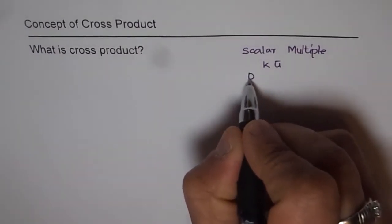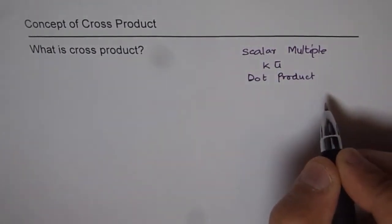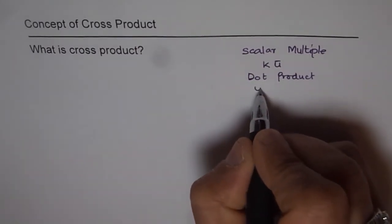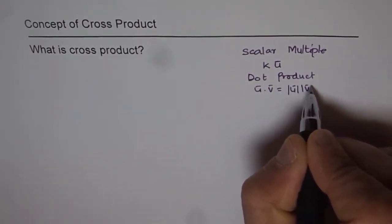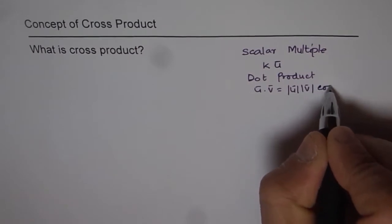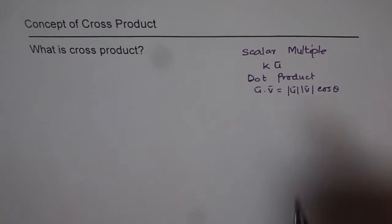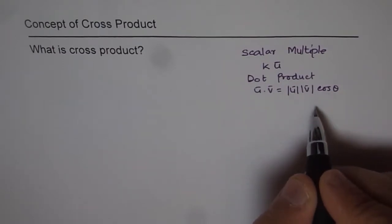Then we learned about dot product. In dot product we learn that dot product of any two vectors is actually a scalar. We can write u dot v as vector u magnitude times vector v magnitude cos theta where theta is angle between them. It is a scalar quantity.